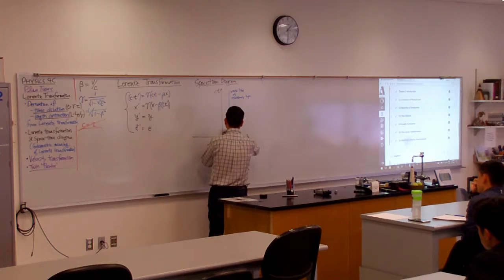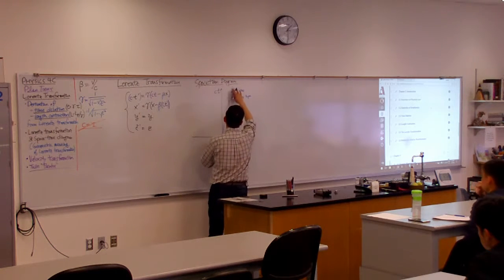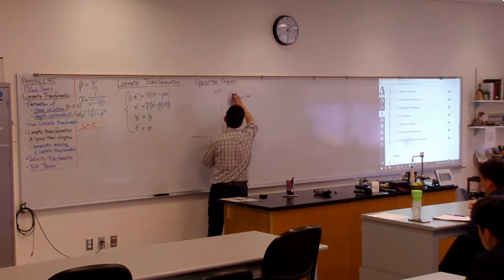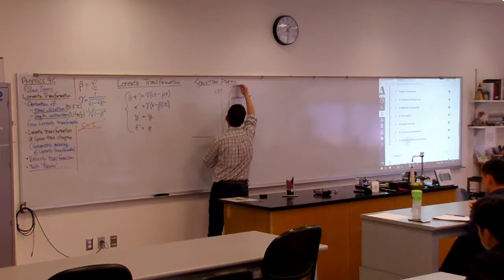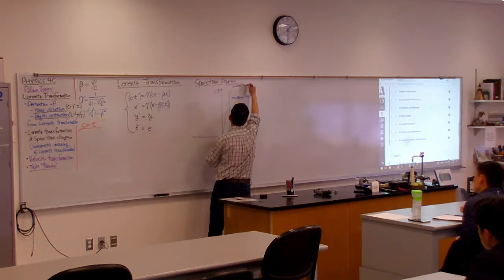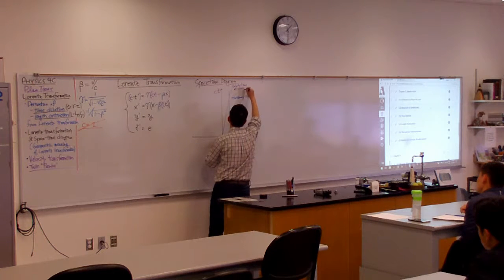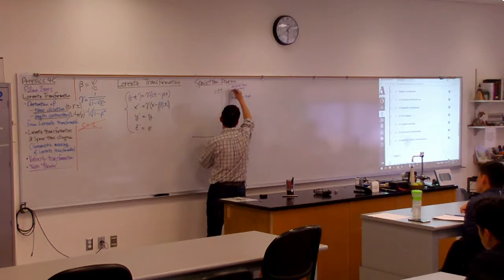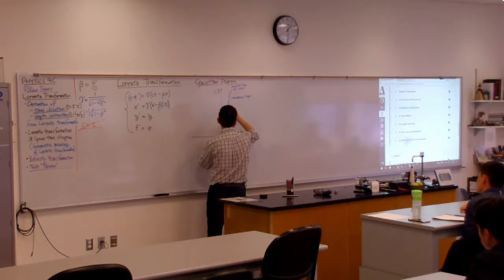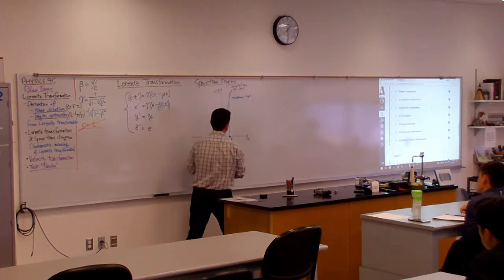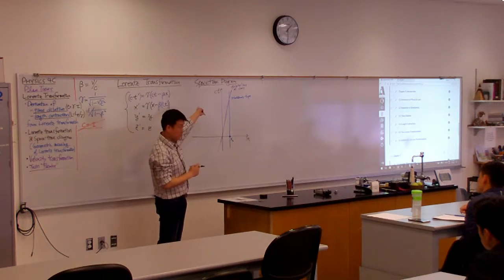So it goes through the axis here, like this. So this would be the world line of the cart. And this world line actually defines another inertial reference frame.